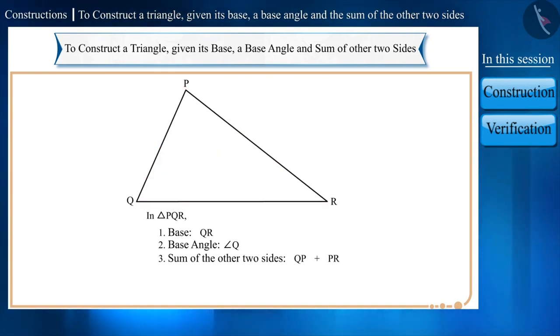For the construction of a triangle, information of three parts is essential. Here, information of three parts of triangle is given. Think, is this information sufficient for the construction of a triangle? Yes, and the steps for the construction of such a triangle are as follows.